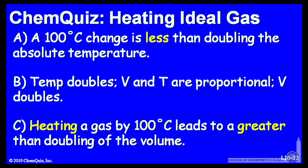Let's look at a possible explanation for each answer. A: 100 degrees Celsius change in temperature is less than doubling the absolute temperature, so the volume changes less than a factor of 2.